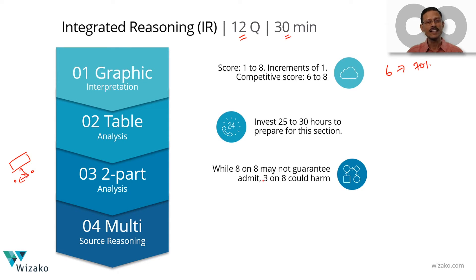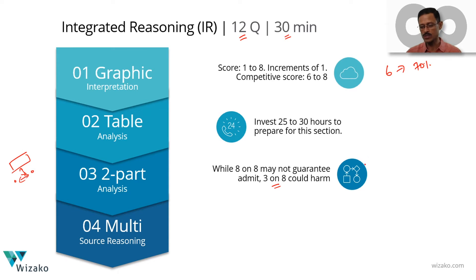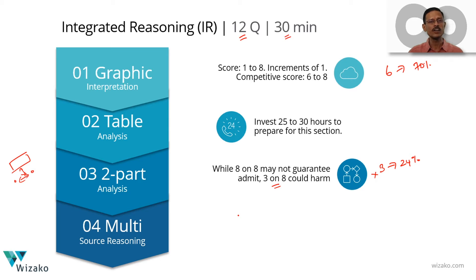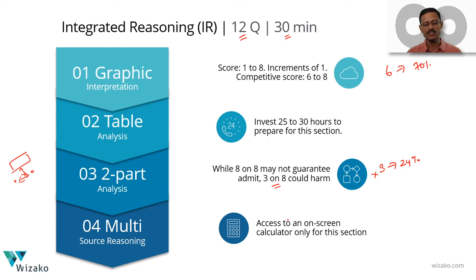If you score 6 to 8, it won't make a differential in your final admit. But a score of 3 on 8 could actually get in the way of your admit — a 3 in 2018 corresponds to the 24th percentile, meaning you're in the bottom quartile. So don't get to that level. This section also has an on-screen calculator, available only for IR. If you need to do any calculations, you can use it, though more often than not you won't need to.